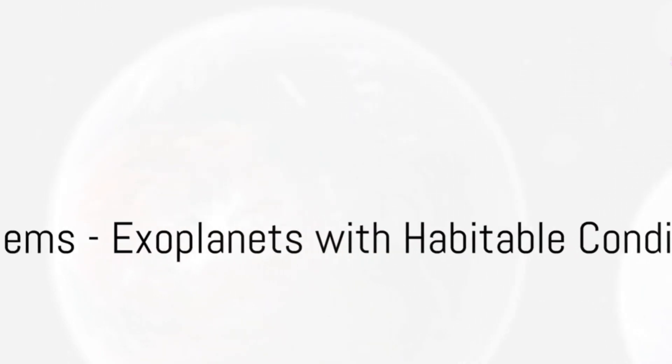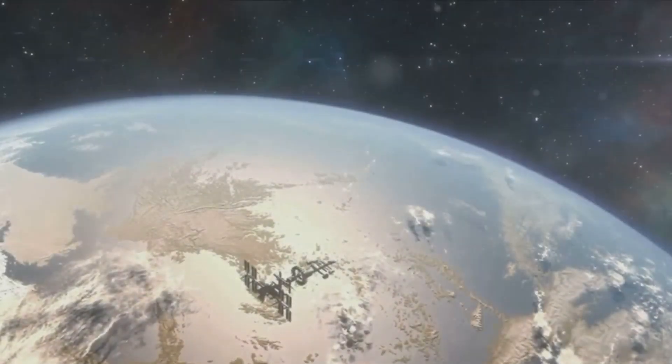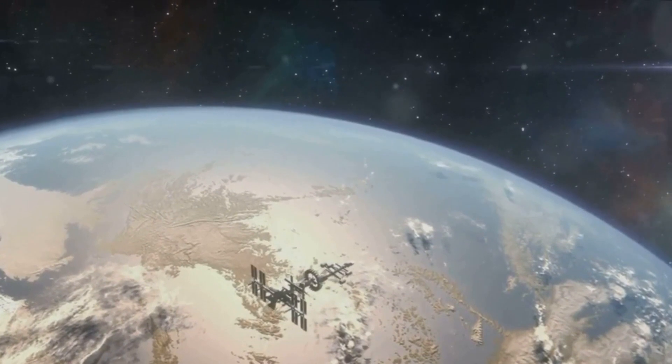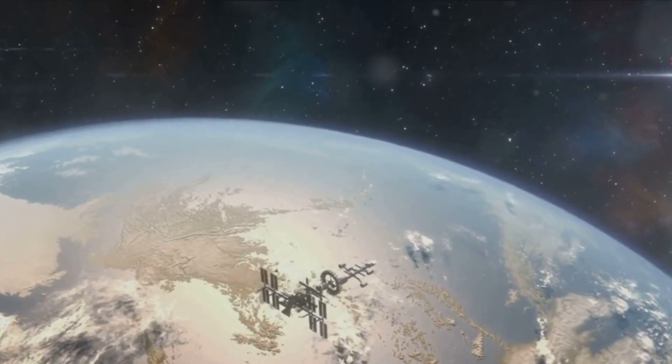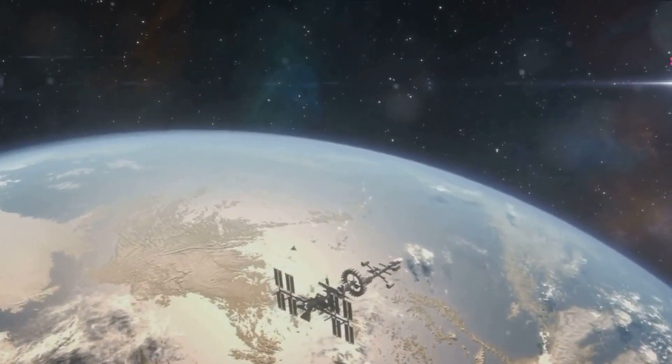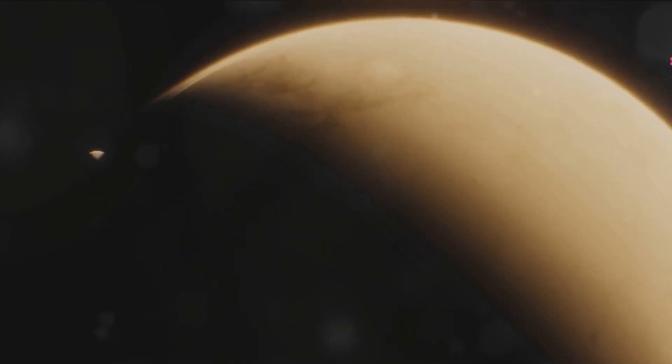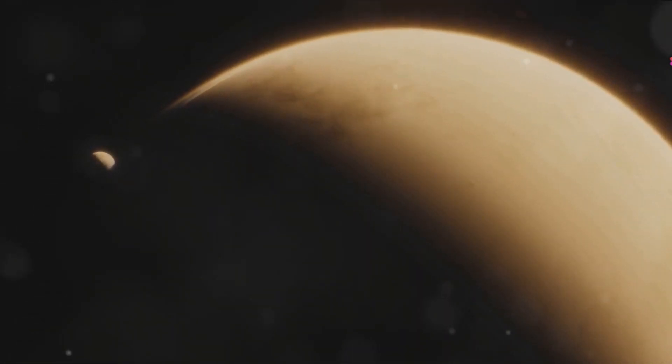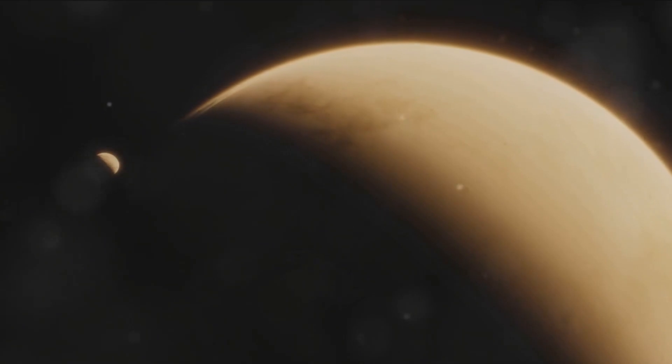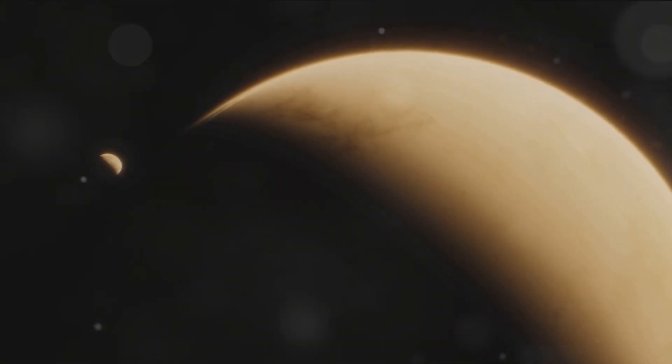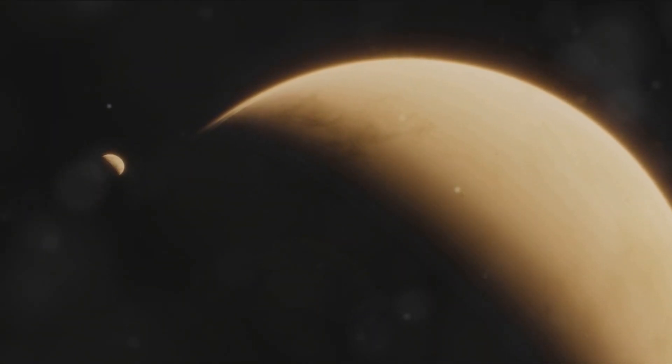Exoplanets with habitable conditions also make the list. While exoplanets, or planets outside our solar system, are abundant, those with conditions suitable for life as we know it are rare gems. Factors such as the right distance from their parent star, the presence of liquid water, and a stable atmosphere make these planets exceptionally uncommon.